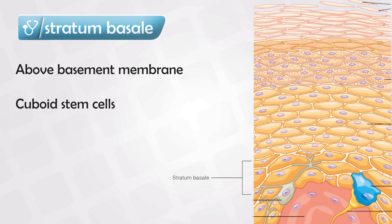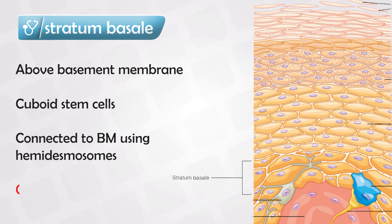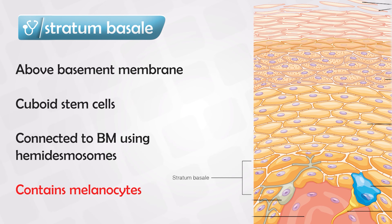The stem cells connect to the basement membrane using hemidesmosomes — we will discuss hemidesmosomes and desmosomes in the cell junction video. Keep in mind that melanocytes, which give the skin its color, are found in the stratum basalis layer. This is very important for exams.